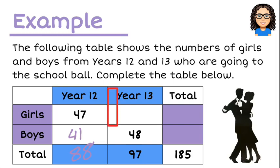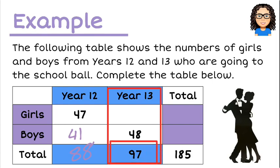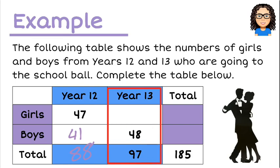Similarly, for the Year 13 students, I know there are 97 of them in total. From those, 48 of the 97 are boys, so the rest must be girls. So if I do 97 minus 48, that leaves 49 Year 13 girls who went to the ball.